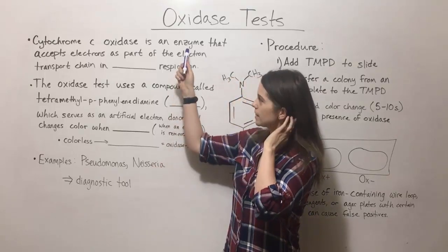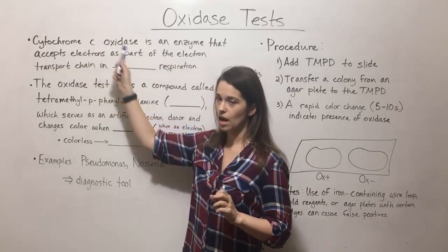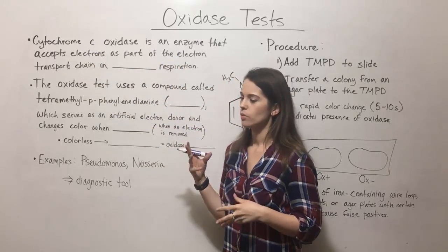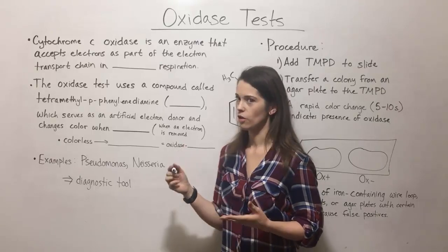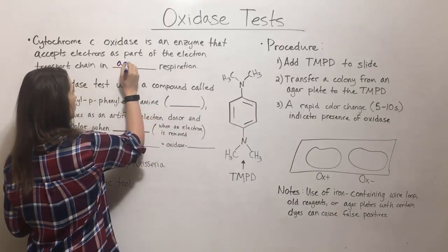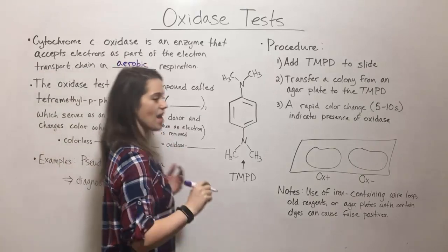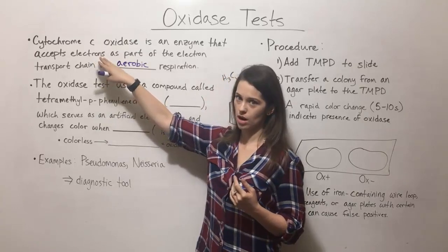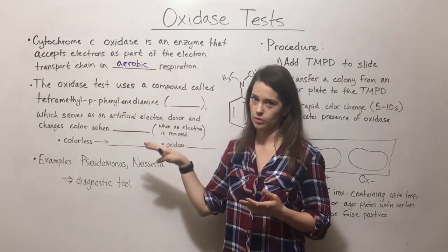There is an enzyme known as cytochrome C oxidase and it is a really important enzyme in aerobic respiration, because it accepts electrons as part of the electron transport chain.